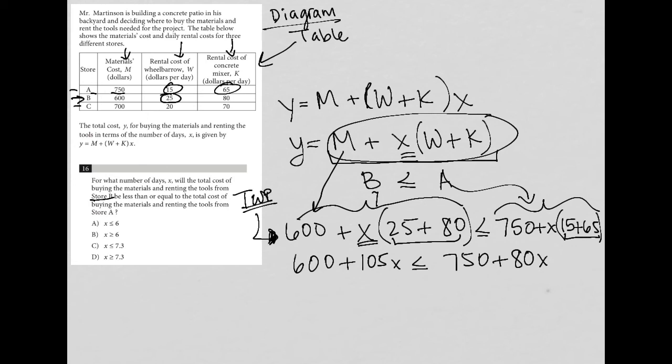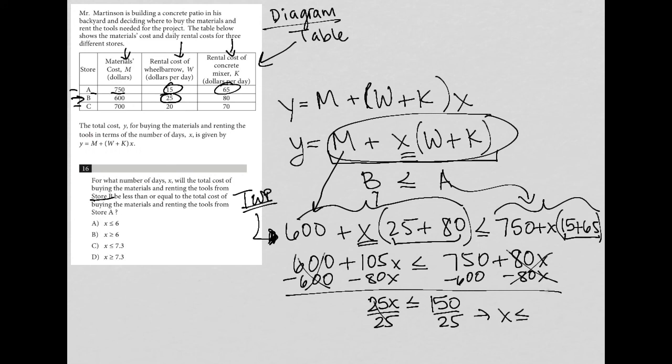Now I can combine some like terms. I want my X's on the left-hand side, my numbers on the right-hand side. So I'm going to subtract 600 from both sides and subtract 80X from both sides. 105 minus 80 is 25X is less than or equal to 750 minus 600 is 150. So almost there, divide by 25. So I end up with X is less than or equal to 150 divided by 25 is 6. So X is less than or equal to 6. And therefore, the final answer here is choice A.